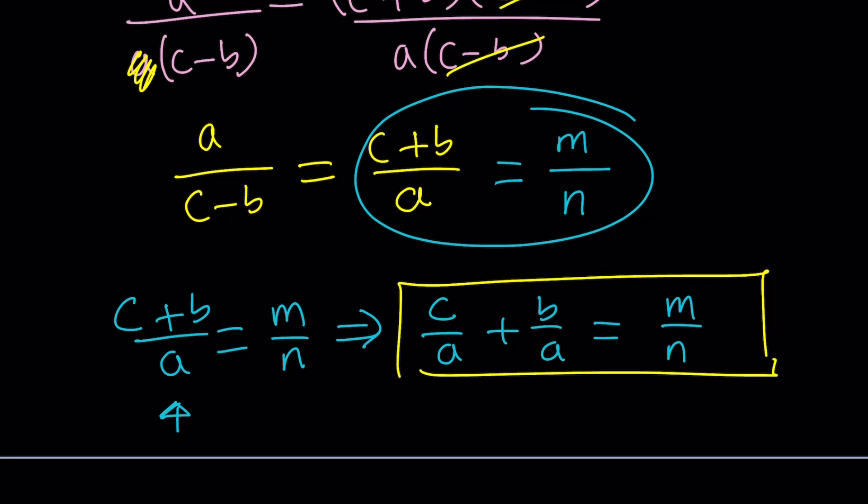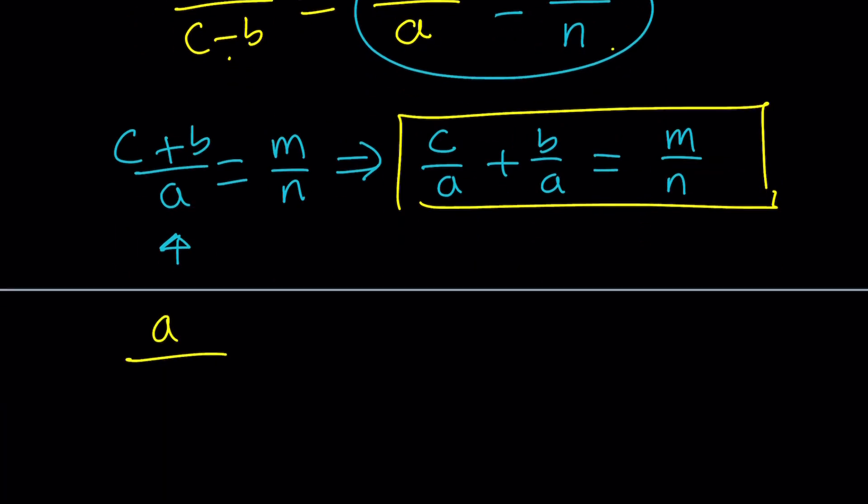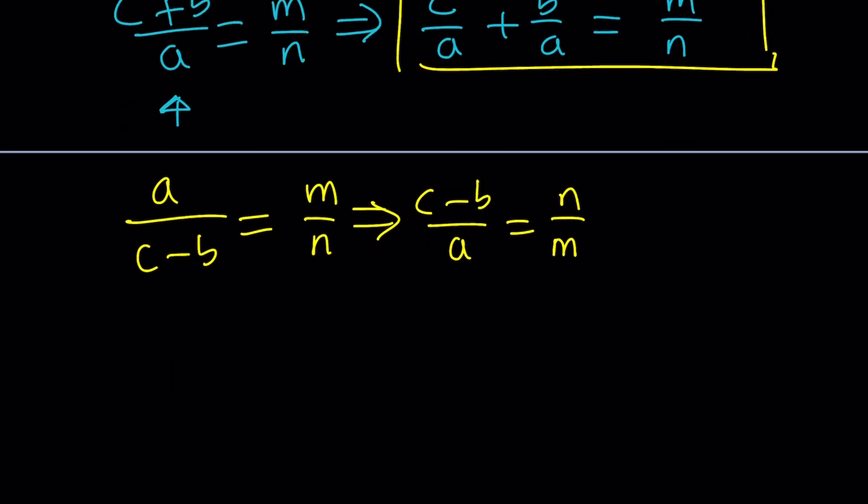Now, we're going to do something similar with the first and the third expressions. We're going to set a over c minus b equal to m over n. I can't split the numerator because it's not split up into two expressions, but don't worry. That's what's cool about math and mathematicians. We can manipulate things. Flip both sides, and you'll get what you need. Now, we can separate these: c over a minus b over a equals n over m.